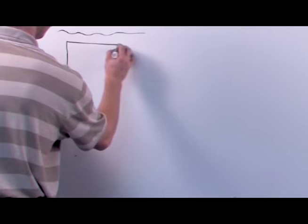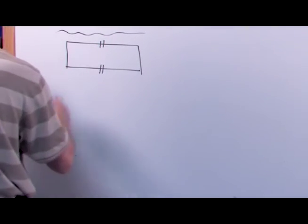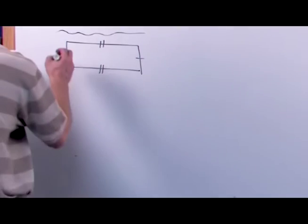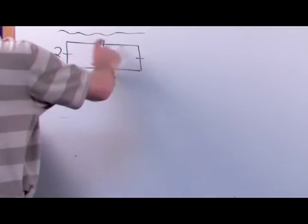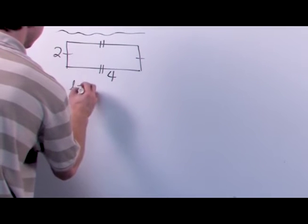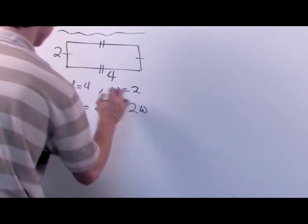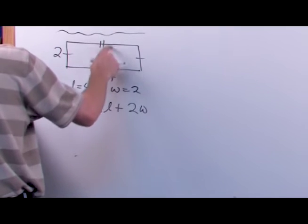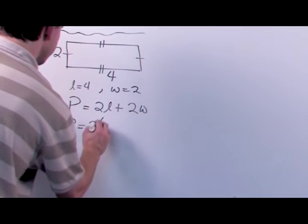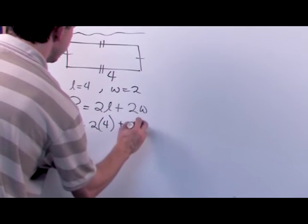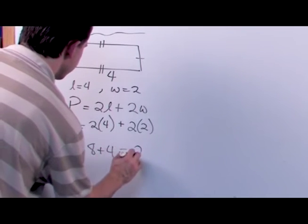If this is a rectangle, they're not going to tell you it's a rectangle — they'll just show you that this side is congruent to that, and that side is congruent to that, and tell you one side has length 2 and another has length 4. Since this is a rectangle, the length L equals 4 and the width W equals 2. You use the perimeter formula 2L plus 2W: 2 times 4 gives you the sum of the two long sides, and 2 times 2 gives the sum of the two short sides.